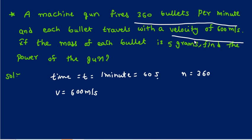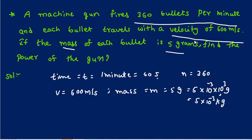Okay, next. If the mass of each bullet is 5 grams, so mass equals m equals 5 grams. Since we need it in kilograms, we convert: 5 grams equals 5 times 10 to the power minus 3 kilograms. That's how we do the conversion.